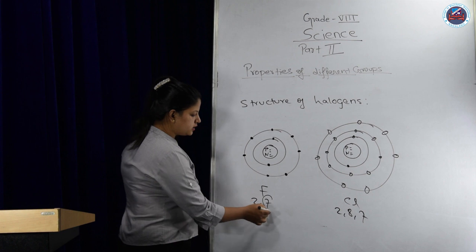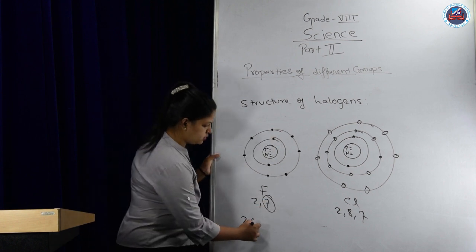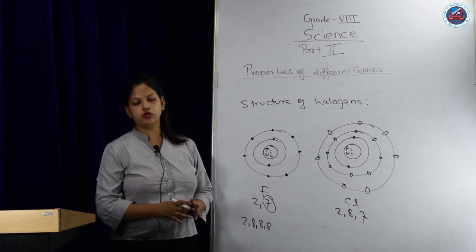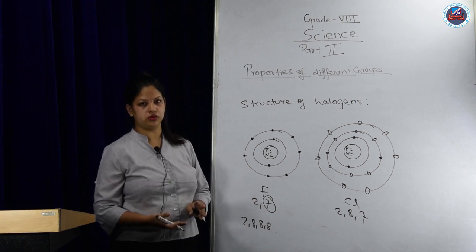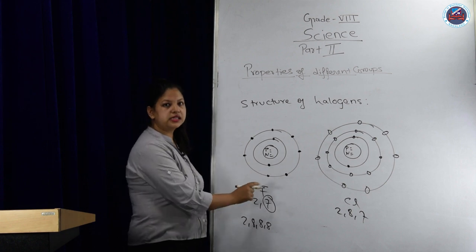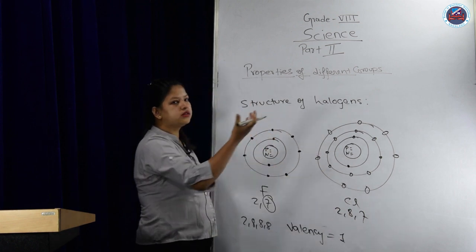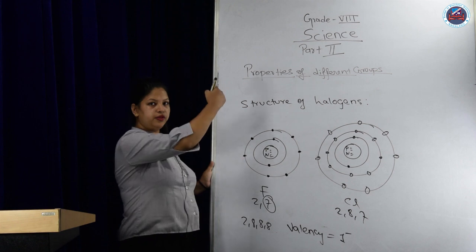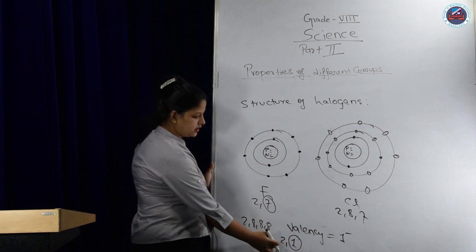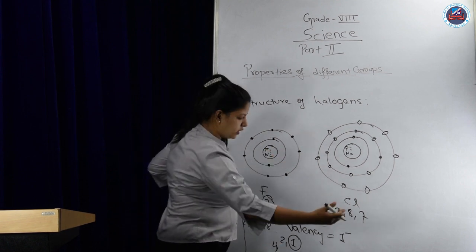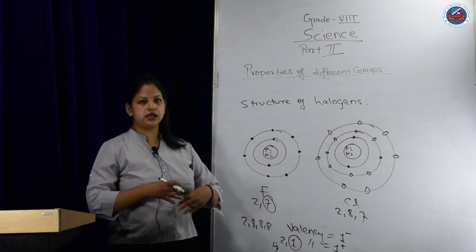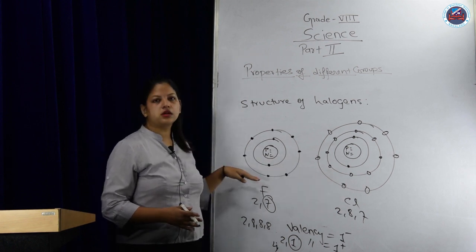Halogens always contain 7 electrons in the last shell. If the octet rule is 2, 8, 8, 8, then if there were 8 electrons it would be satisfied. So you can understand it is in need of one electron more. If one more was there, it could have been 8. In that case, its valency becomes 1, but since it is receiving, it will be 1 negative. In group 1, the last shell contained 1. Since 1 is there, it can give away that electron, so its valency will be 1 positive.